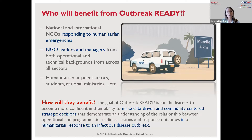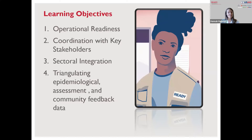The simulation also focuses on helping the player understand the important relationship between programmatic and operational readiness actions and actual response outcomes — the reality and consequences of choices made in the preparedness and readiness phase impacting the actual response. There are four primary learning objectives centered around operational readiness, coordination with key stakeholders, sectoral integration, and triangulating epidemiological assessment and community feedback data in order to adaptively manage in an outbreak. This last one highlights the variety of information sources — often contradictory — that a team lead receives and has to piece together in an outbreak response context.